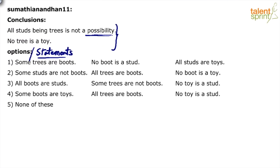Usually the reverse process applies - statements are given and we identify the right set of conclusions. Here, conclusions have been given and we must find the right set of statements. What do we do? Very simple: draw the basic diagram for each option and see which diagram satisfies both conclusions.